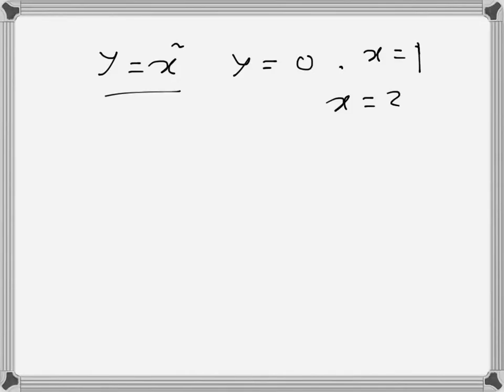We have y equal to x squared, y equal to 0, x equal to 1, and x equal to 2. The area enclosed by these four curves is revolved around x equal to 1, and a volume is generated as a result. We need to find that volume.